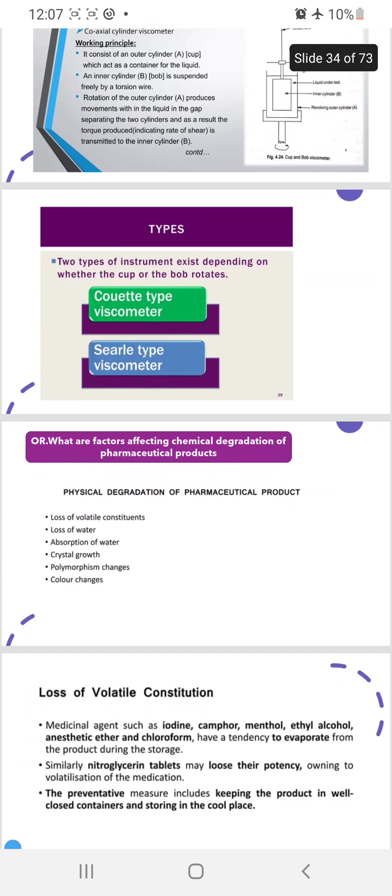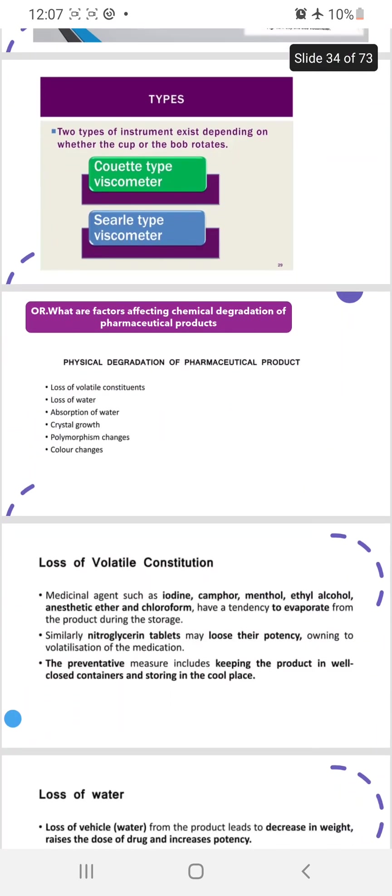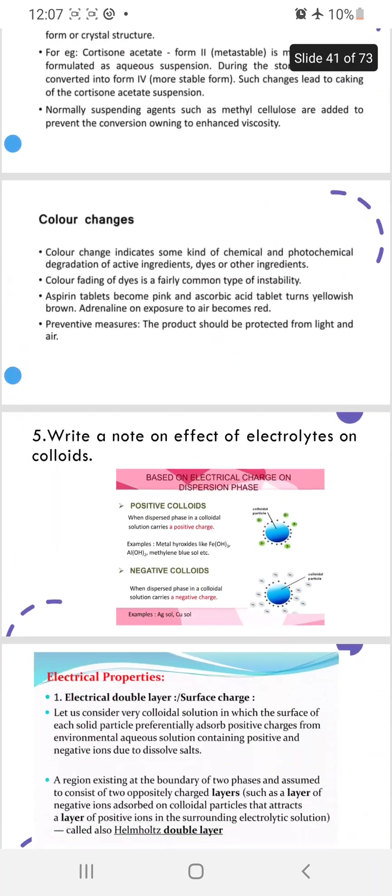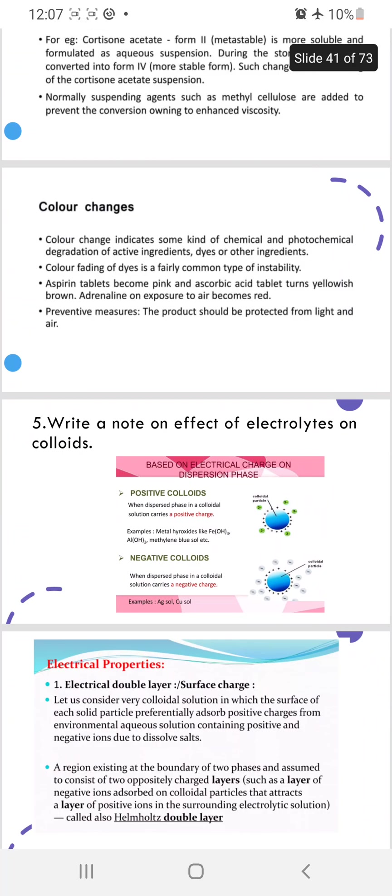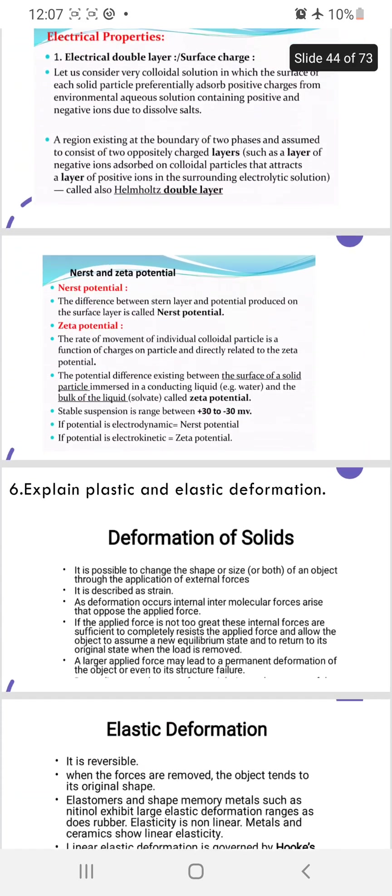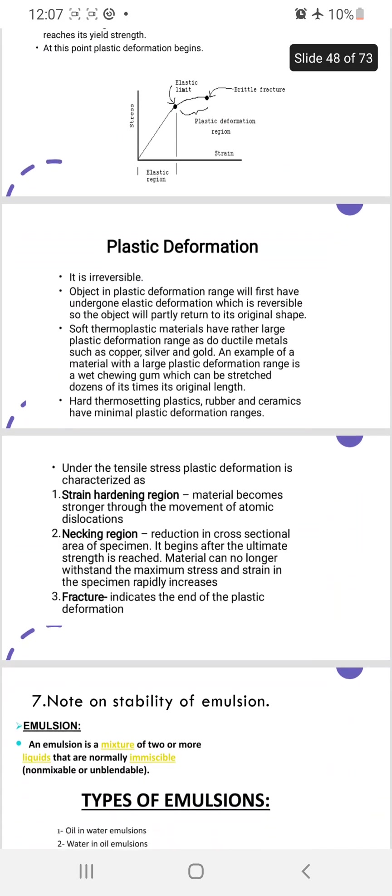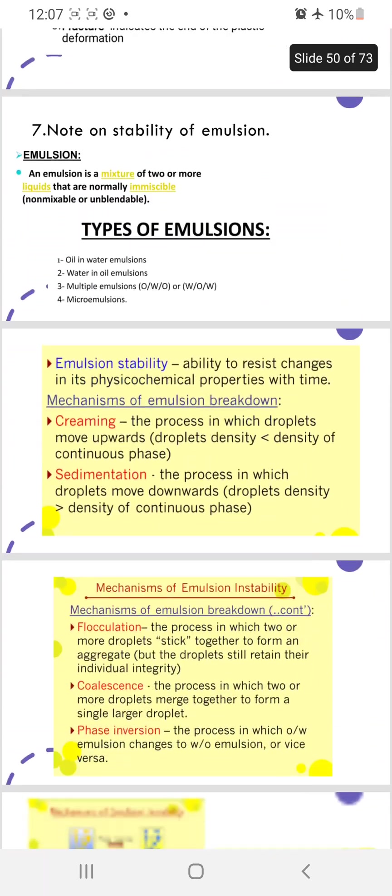Factors affecting chemical degradation - these all factors first you have to write then explain. Write a note on effect of electrolytes on colloids. Then explain plastic and elastic deformation with a graph you have to mention.